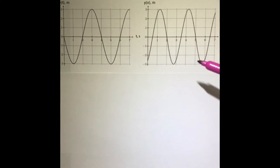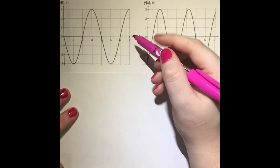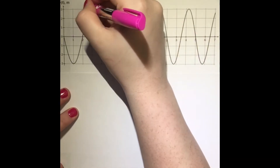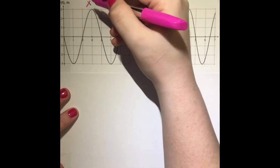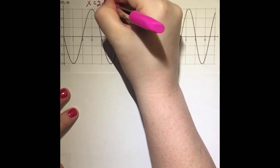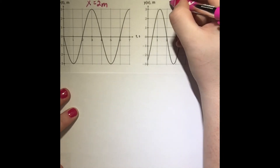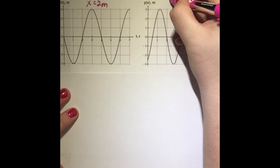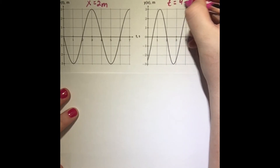Here I have both graphs. For the graph that is a function of time, we are looking at the wave at a specific point, x equals 2 meters, as given in the problem. For the graph that is a function of position, we are given that we are looking at it at the specific time, 4 seconds.